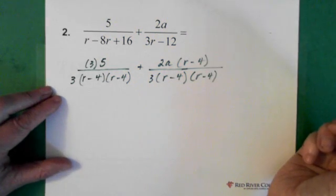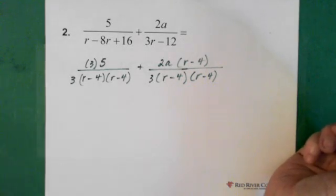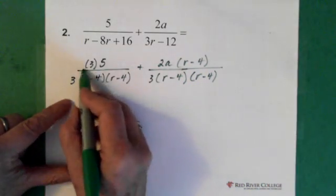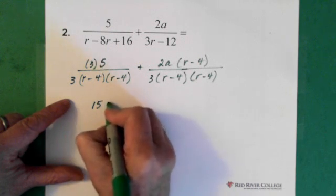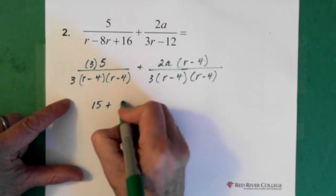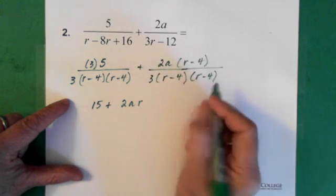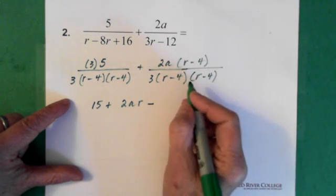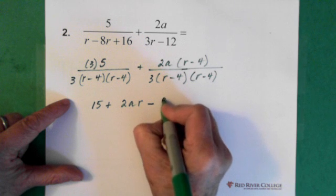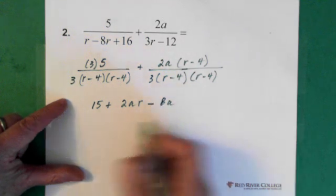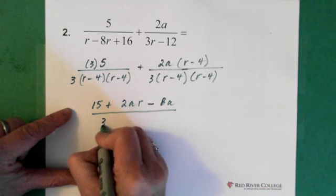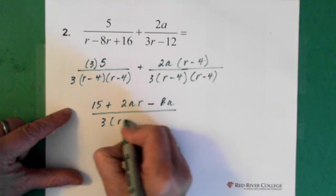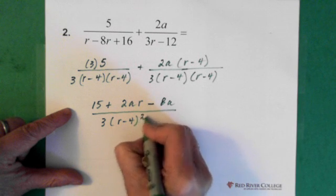Okay. So now we have on the top here, 15 + 2ar - 8a.